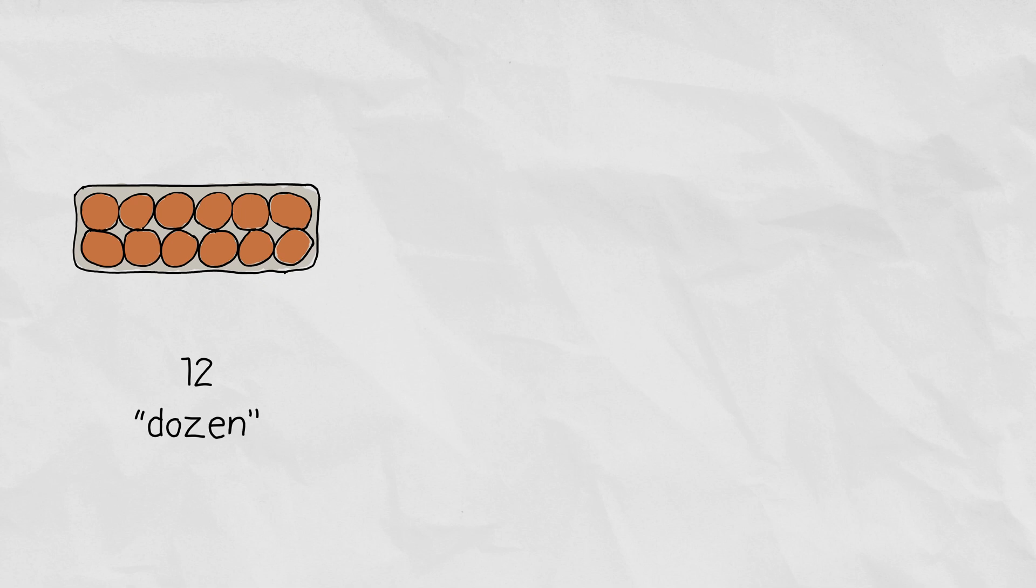When you go to the store to buy eggs, they tend to come in a pack of 12. This is called a dozen. So when you buy two dozen eggs, you're actually buying 24 eggs. The egg farming industry likes to use dozens when they count their eggs. You can also go to the store and buy a pair of socks, which is made of two socks, so when counting socks, people like to use pairs to count them.